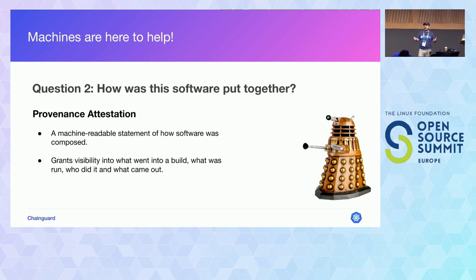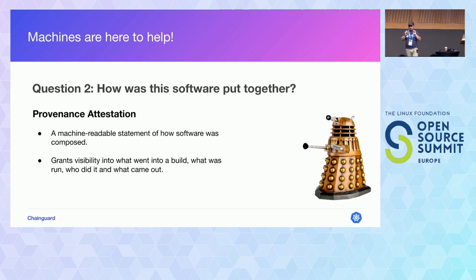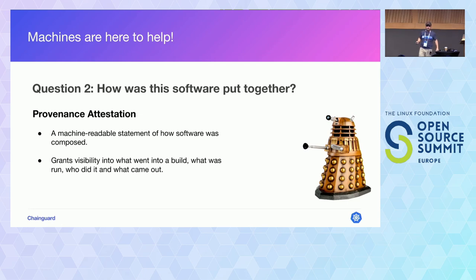The second question is: how was this software put together? That's why we have provenance attestations. I'm specifically talking about SLSA provenance attestations. An attestation is composed of four key pieces: what were the materials used to build the software, what transformation was done to build it, who did the actual build and using what, and what were the artifacts that came out. Completing those four pieces lets you answer a lot of the questions about artifacts flowing through the release process.